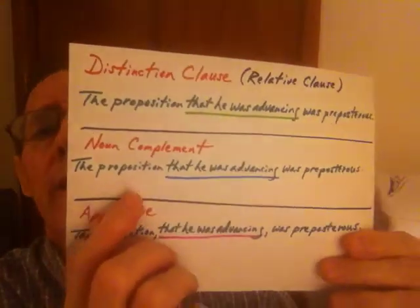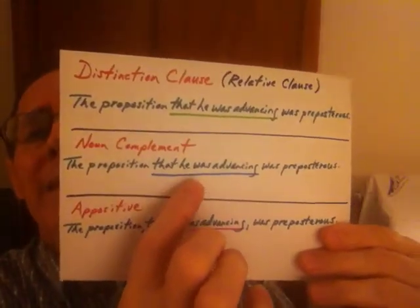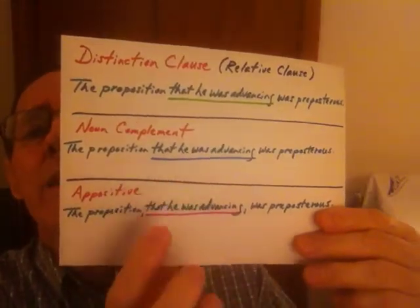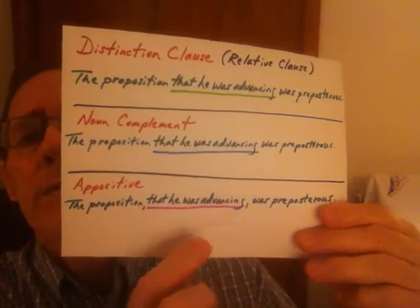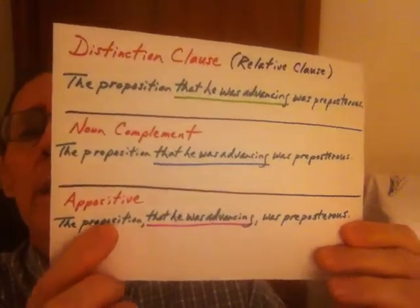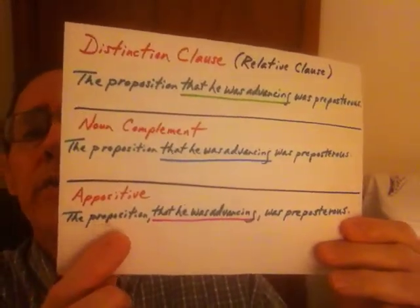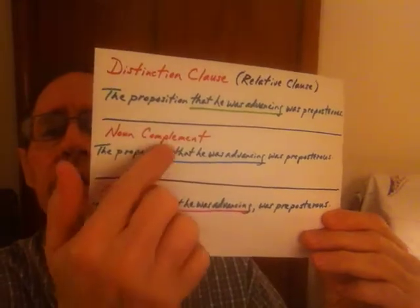I also showed how it could be used as a noun complement. Then if you throw in some commas, it could be used as an appositive. But if somebody's really paying attention, they would say: what's really the difference between that noun complement and the appositive? What's the big difference? So let's take a look at that.